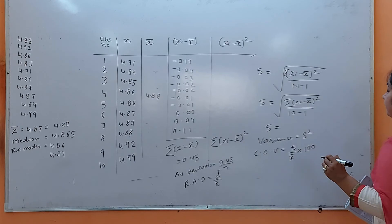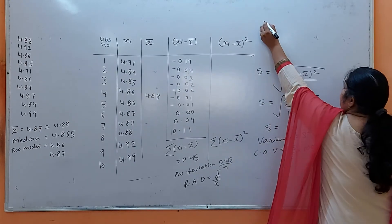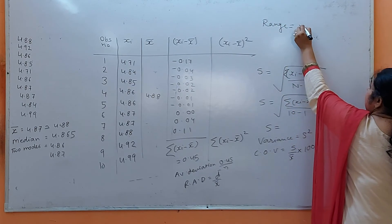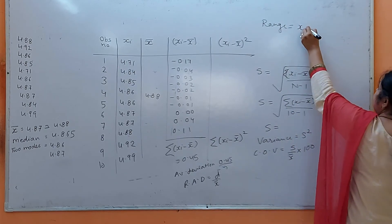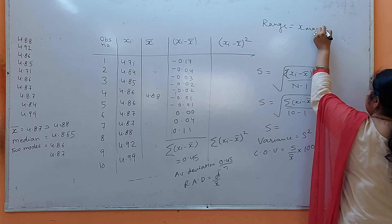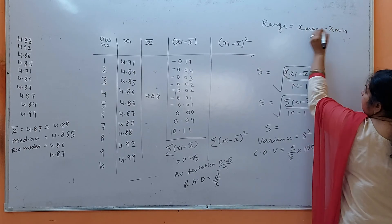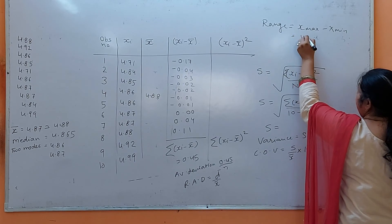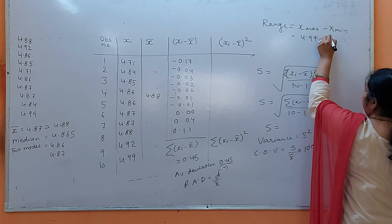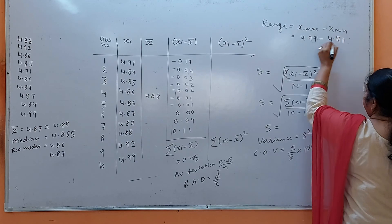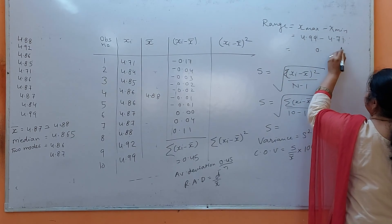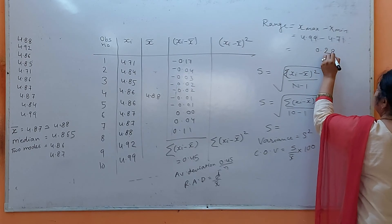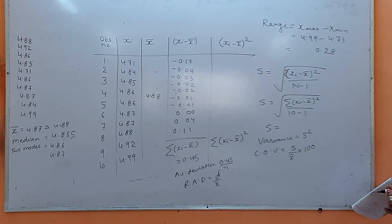Finally, find the range: x-max minus x-minimum. The maximum is 4.99 and the minimum is 4.71, so the range comes out to be 0.28.